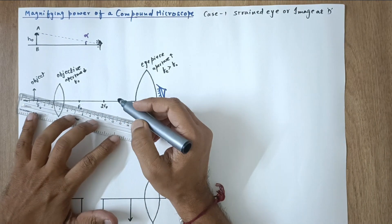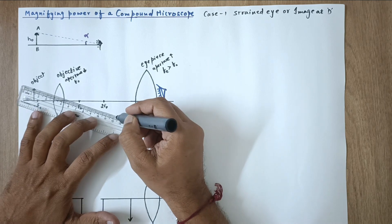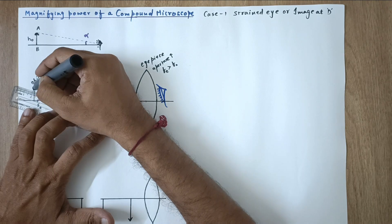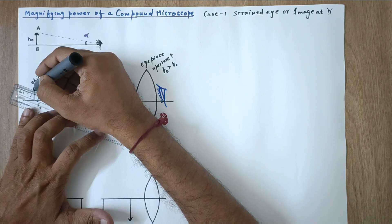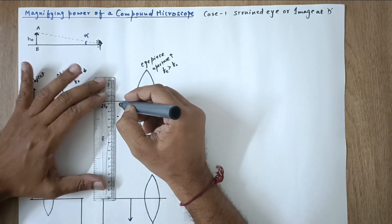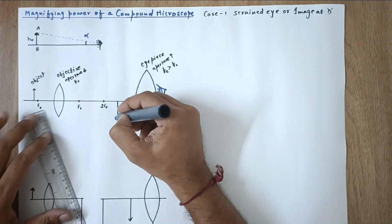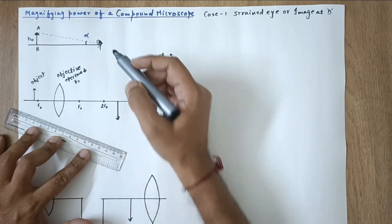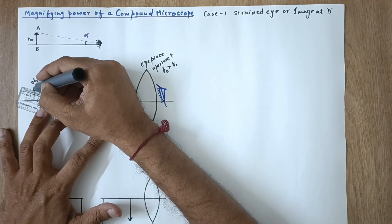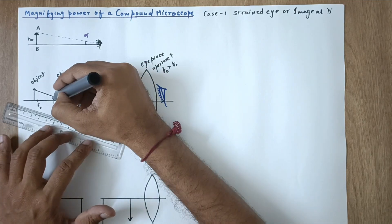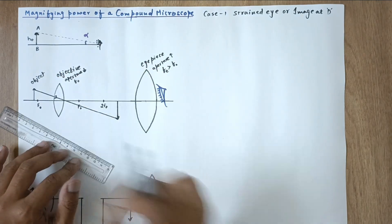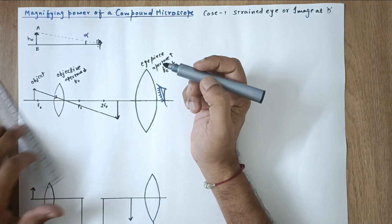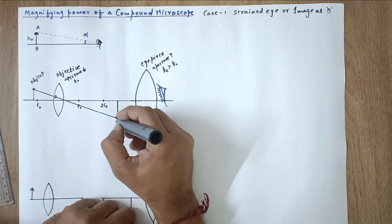Let's trace a ray from the head of the object. The image will be formed beyond 2f — this is because when the object is between f and 2f, the image forms beyond 2f. A ray passing through the optical center goes straight, and another ray passes through f. The final image for the objective lens is formed here.